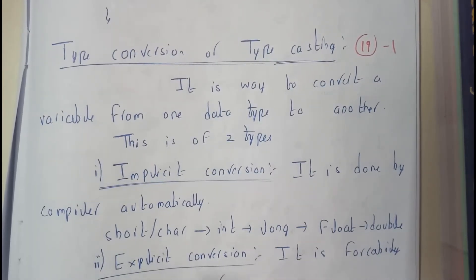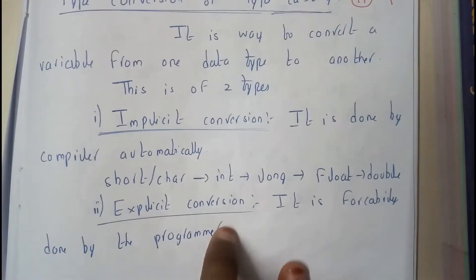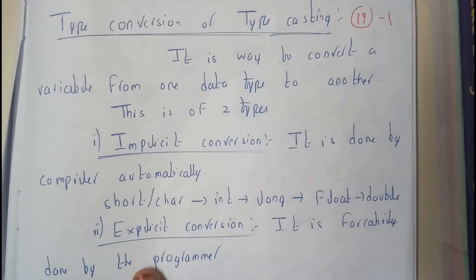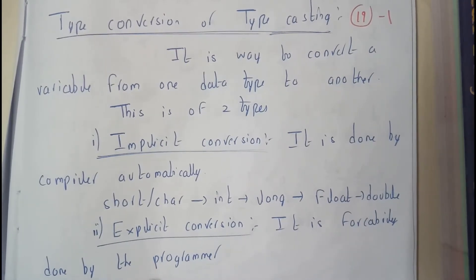Those are implicit conversion and explicit conversion. Implicit conversion is done by the compiler automatically. So there is no need to say, hey do that conversion, please do this conversion or do that or do this. It will automatically do it.